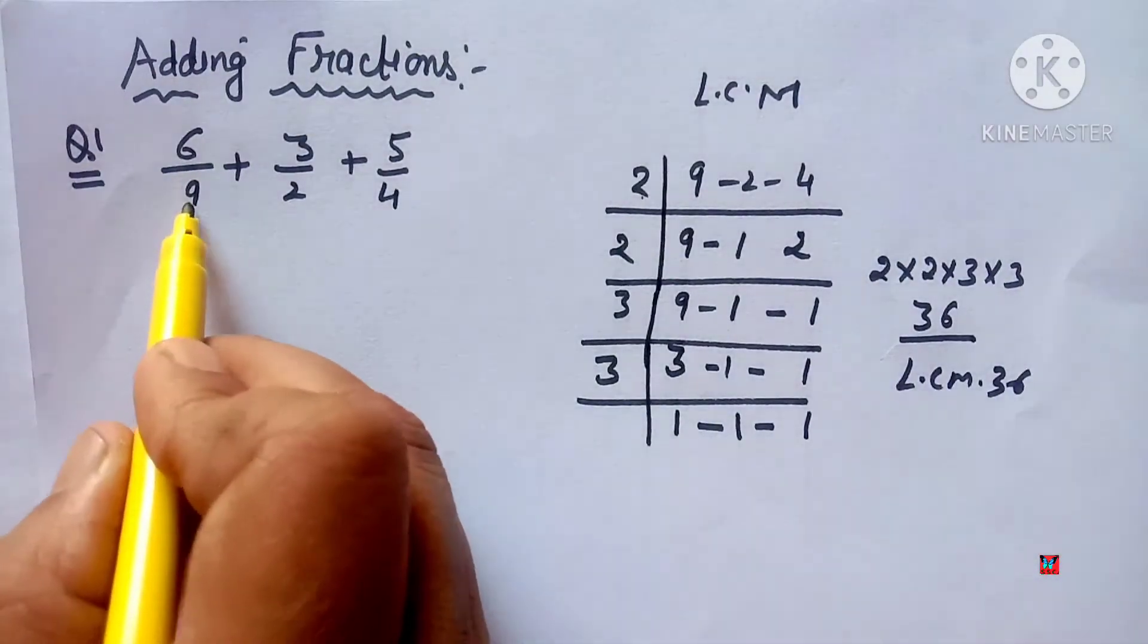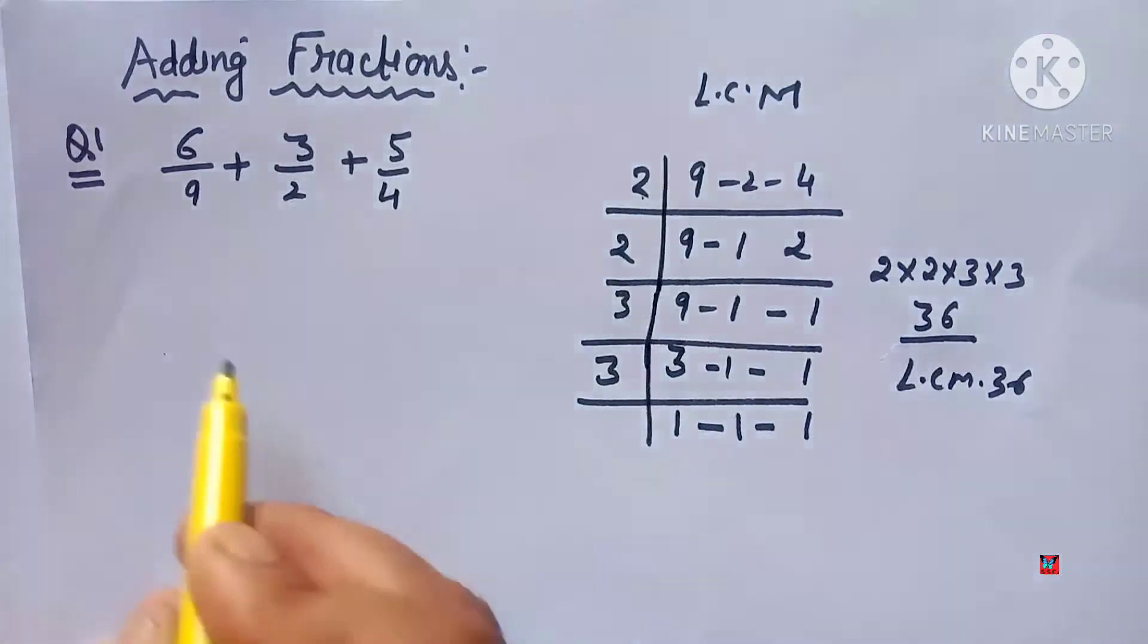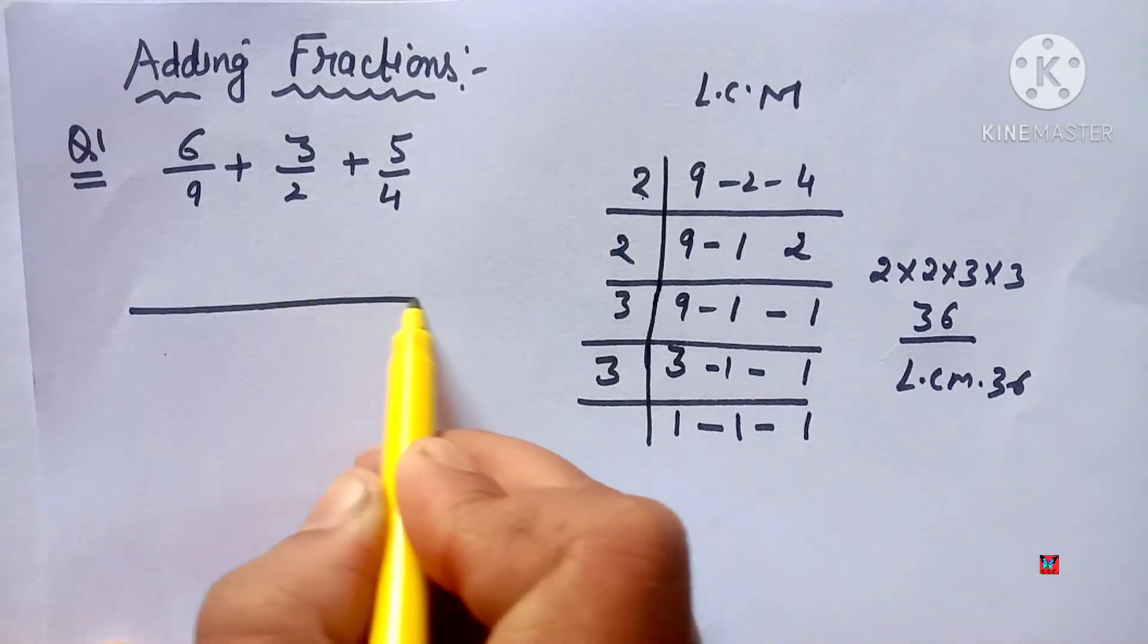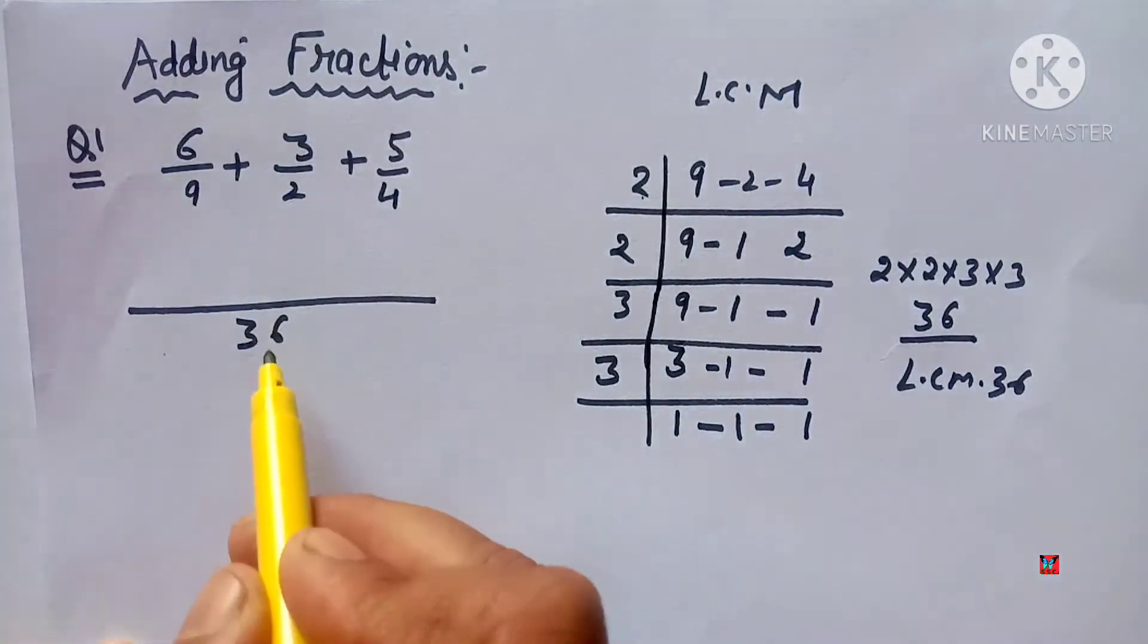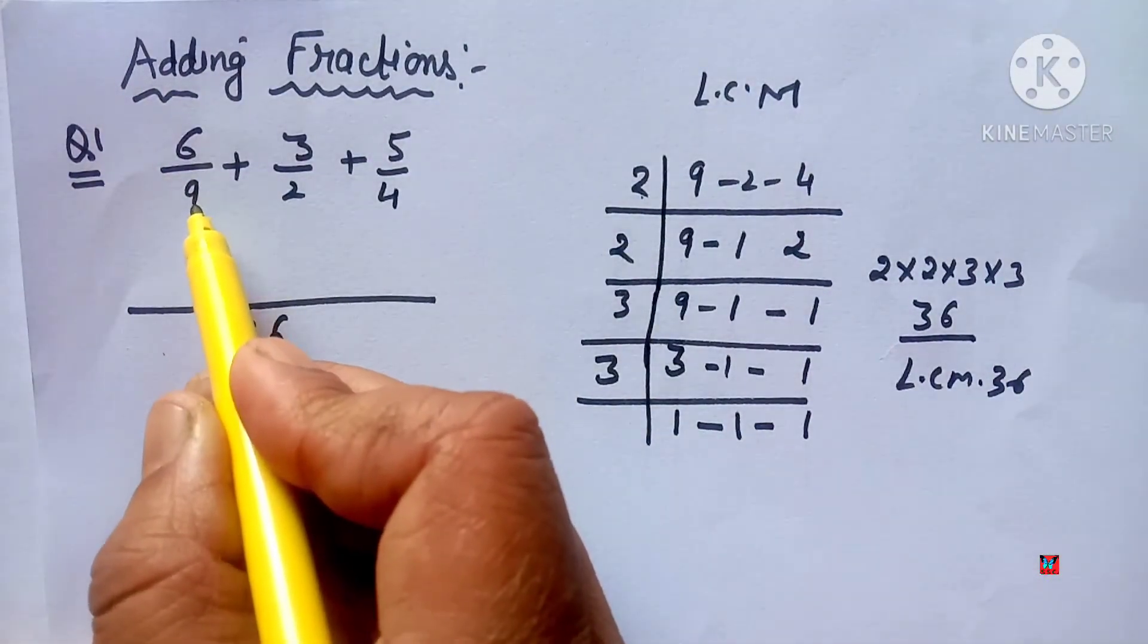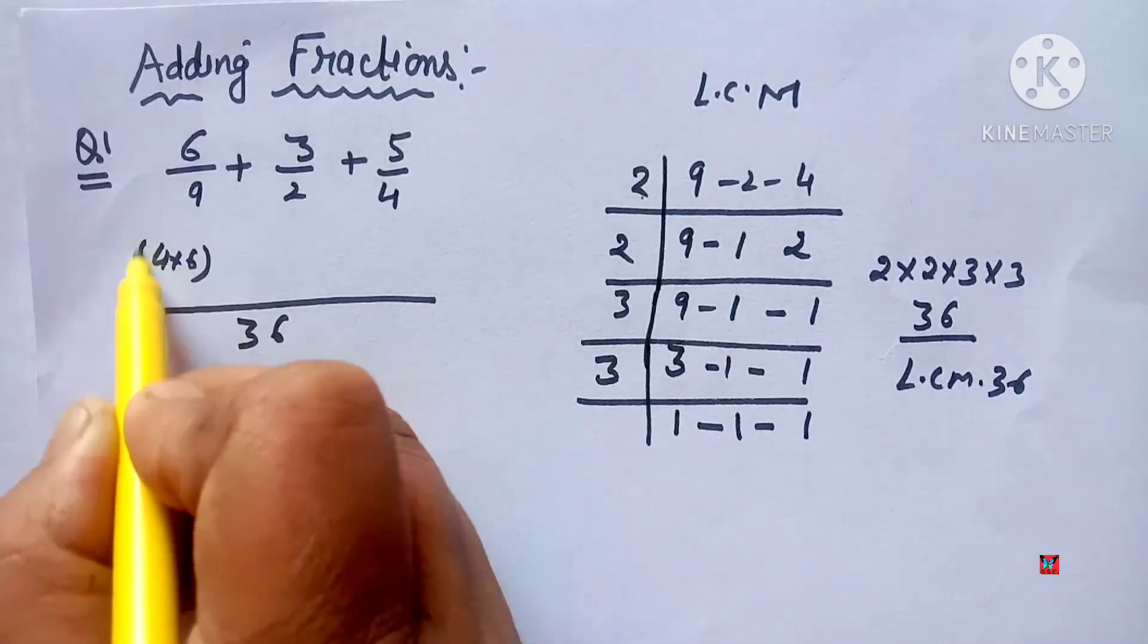When you add fractions with different denominators, you have to take the LCM. We take LCM of 9, 2 and 4, which is 36. Now next step: 36 divided by 9 gives 4, and this number multiply: 4 multiply by 6.